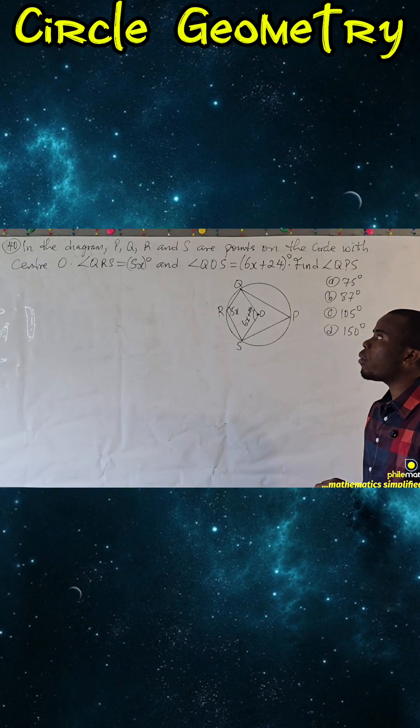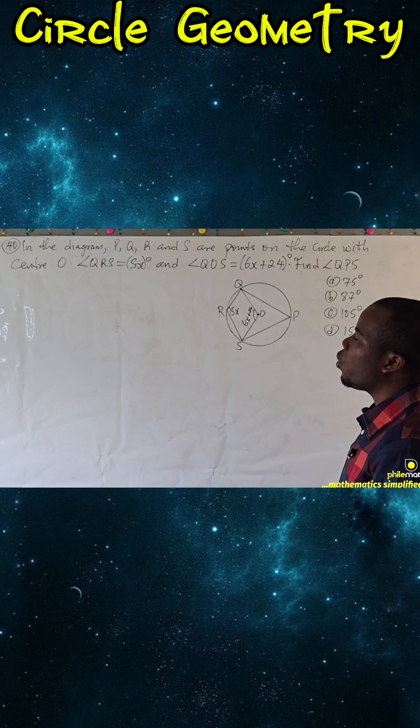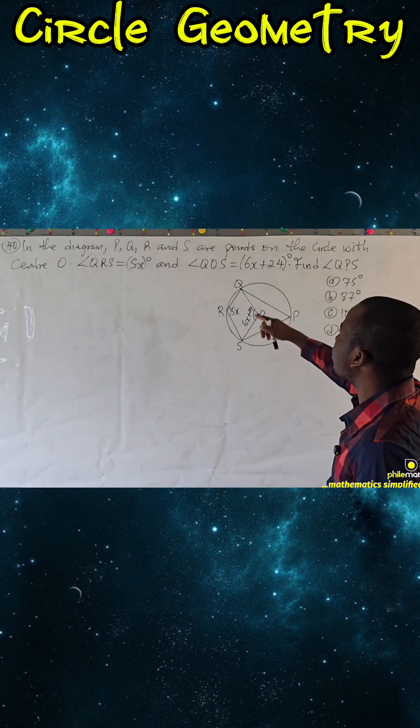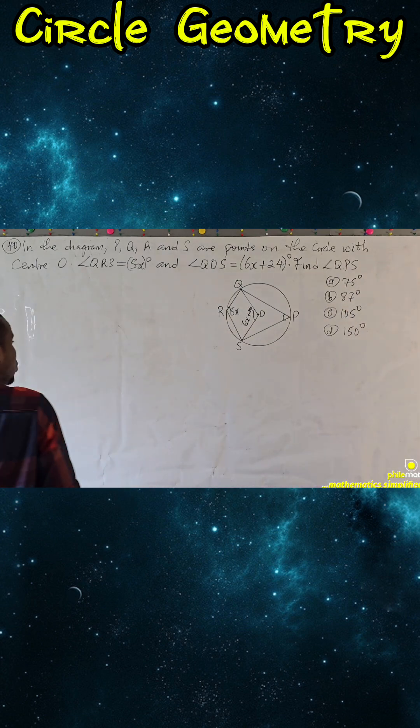In the diagram, PQR and X are points on the circle with center O. Angle QRS is 5x degrees and angle QOX is 6x plus 24 degrees. Find angle QPS, this angle.